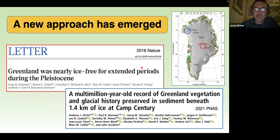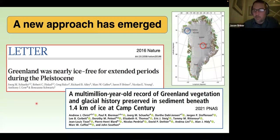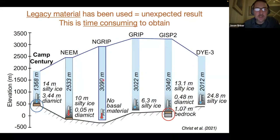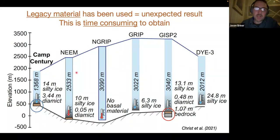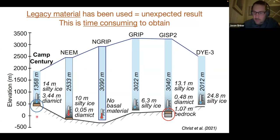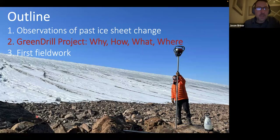These two records — the cosmogenic nuclides in bedrock and sediment from the bed — are probably the most robust techniques to tell us about ice sheet presence and absence in terms of timing. This is a nice figure that Drew compiled in his PNAS paper showing the various ice cores that go through the ice sheet and whether they collected basal material or not, including the GISP2 bedrock analyzed in the Schaefer paper and sediments from Drew's ongoing work.